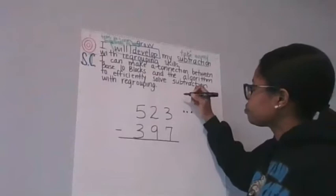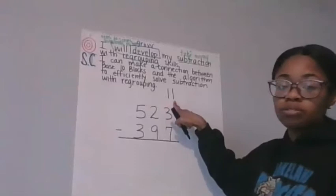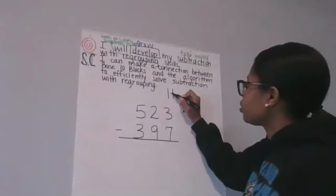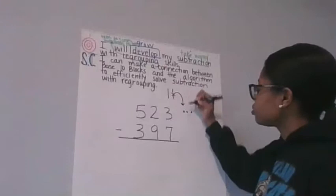So if I had to draw out my tens, it would look like this. Ten, twenty. Hmm. What if I took away one of those tens, and made it into ones?